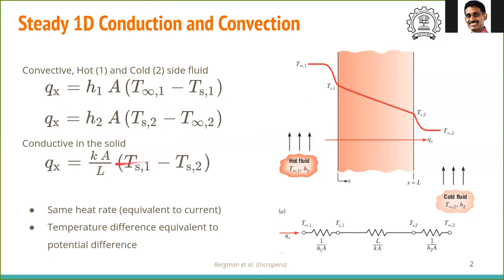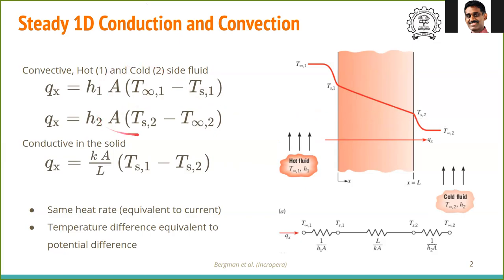In all three heat transport expressions, two things are common: the area is the same, and the heat flux is the same — whatever heat enters is what is conducted, and it's the same heat that is convected out. There are no other leaks. In cases where the heat flux is the same throughout and the area is the same, we can take an analogy of these equations with electrical resistance equations.